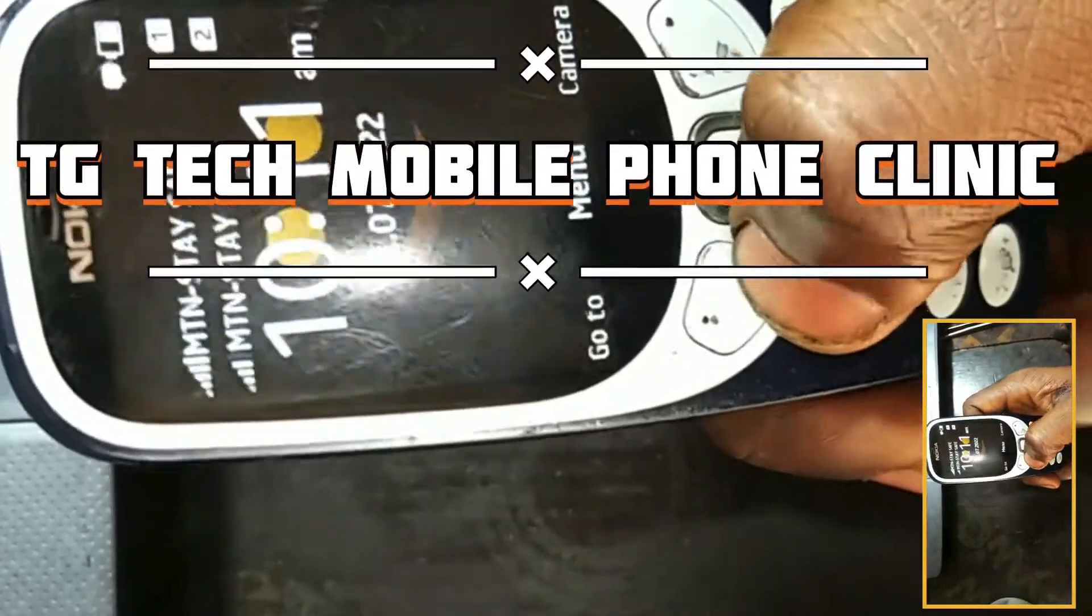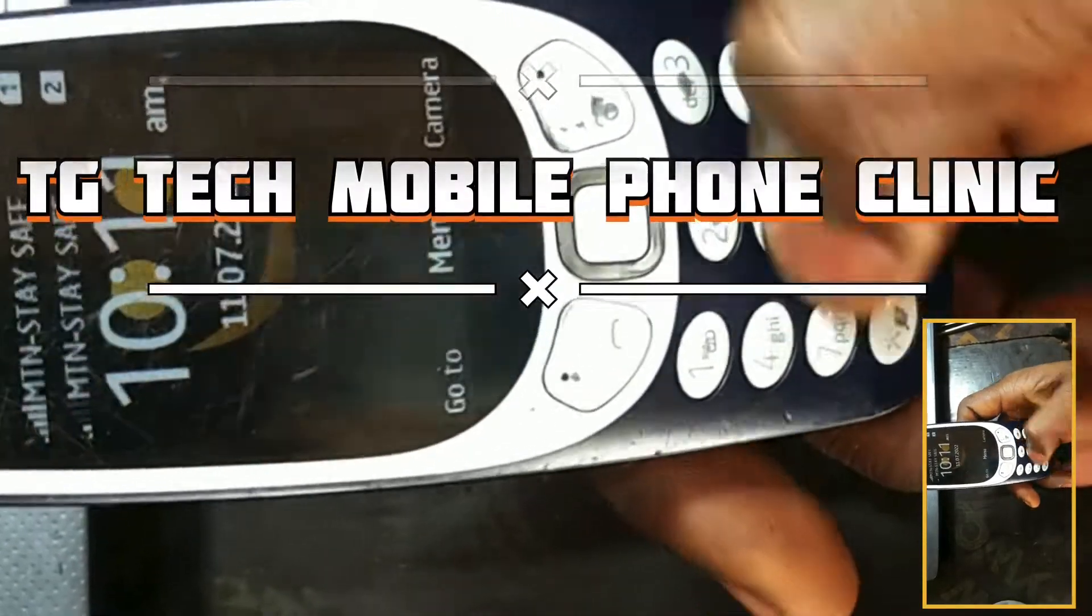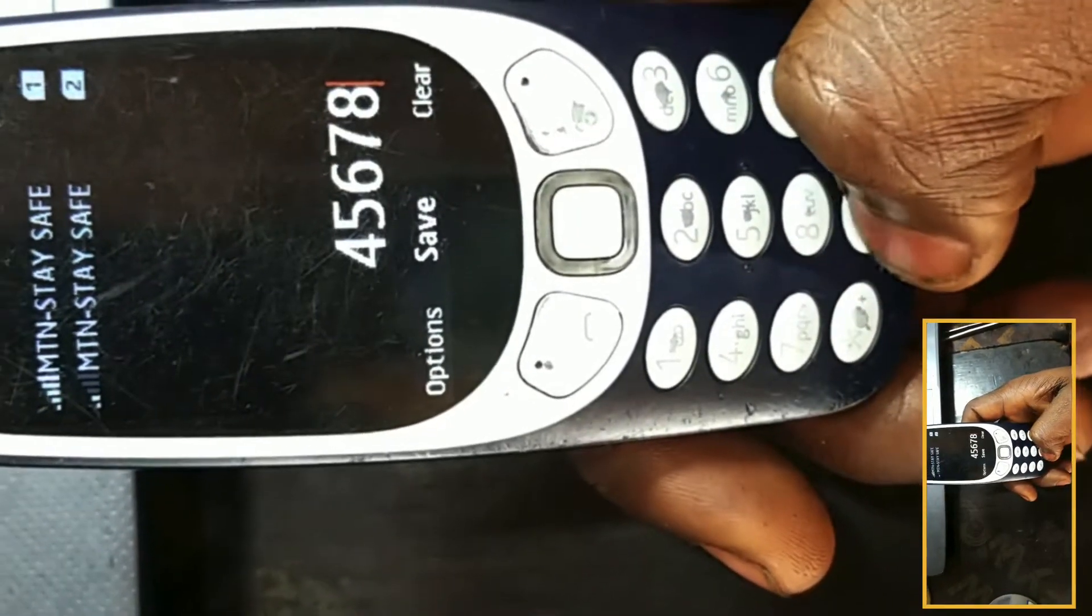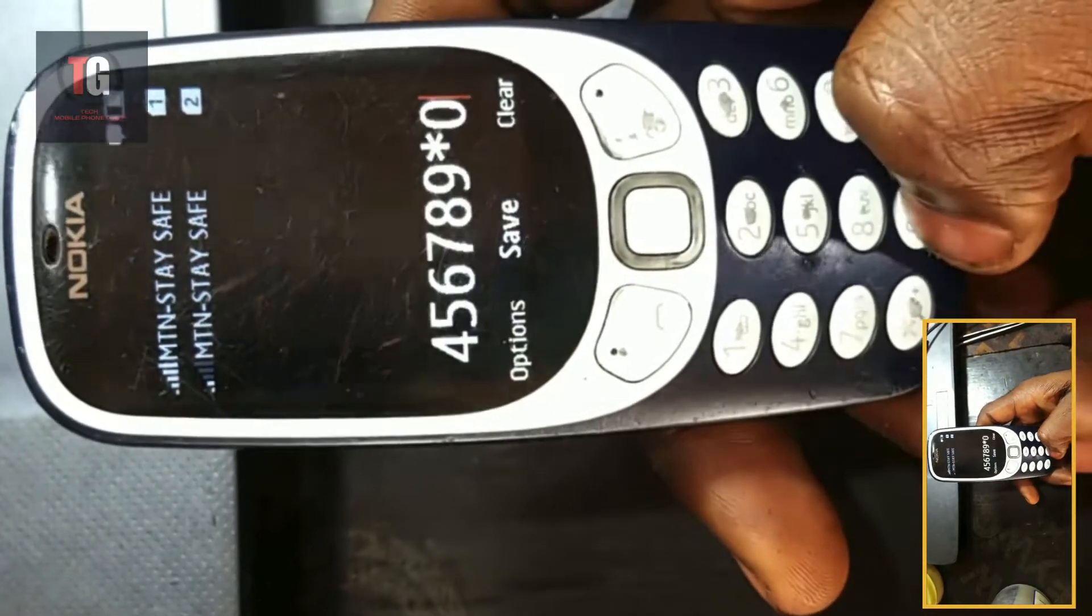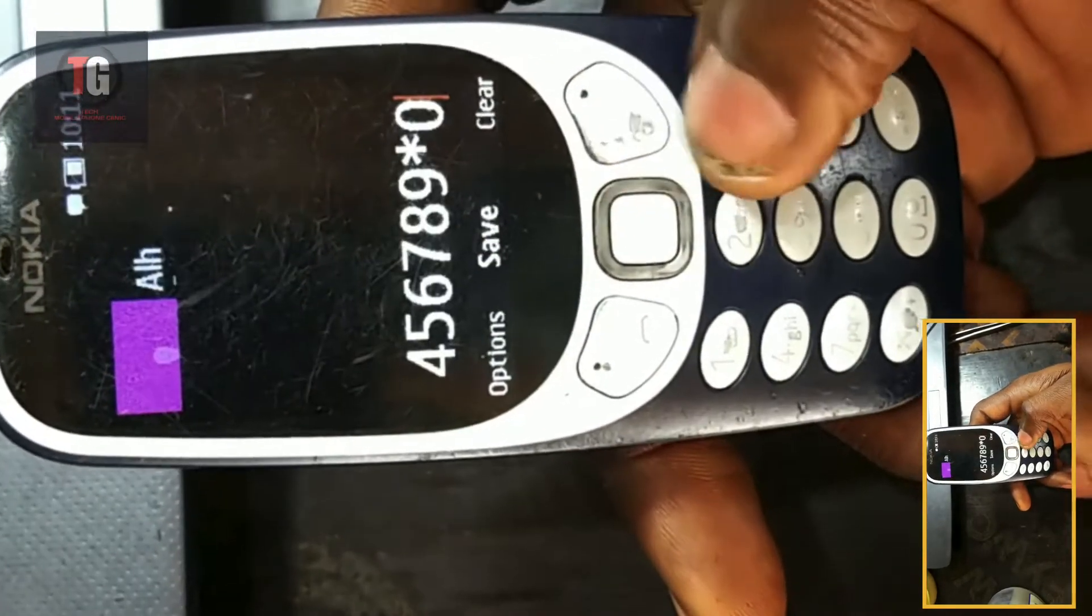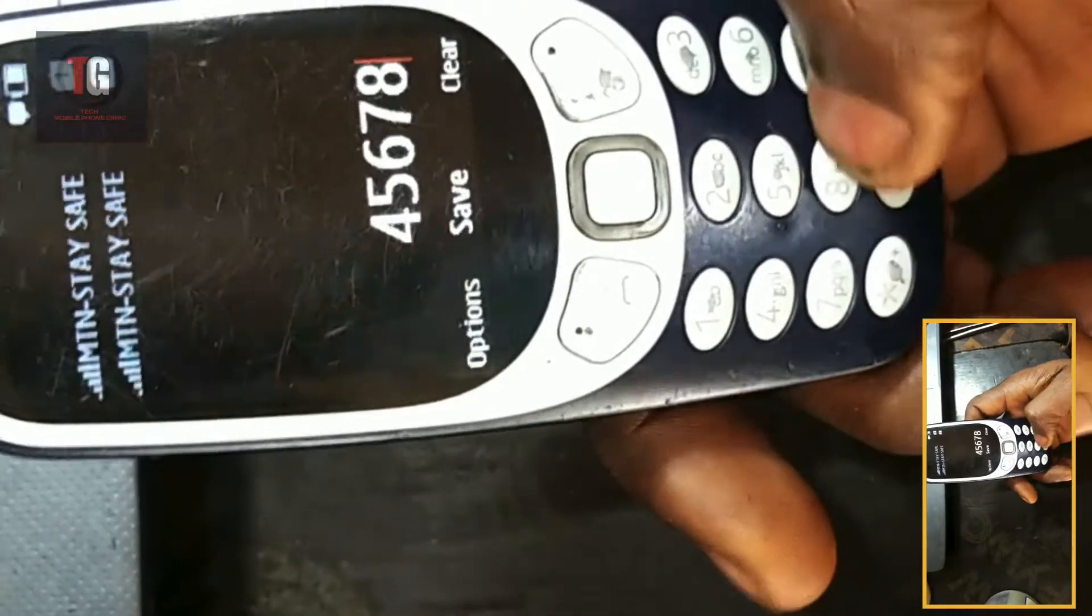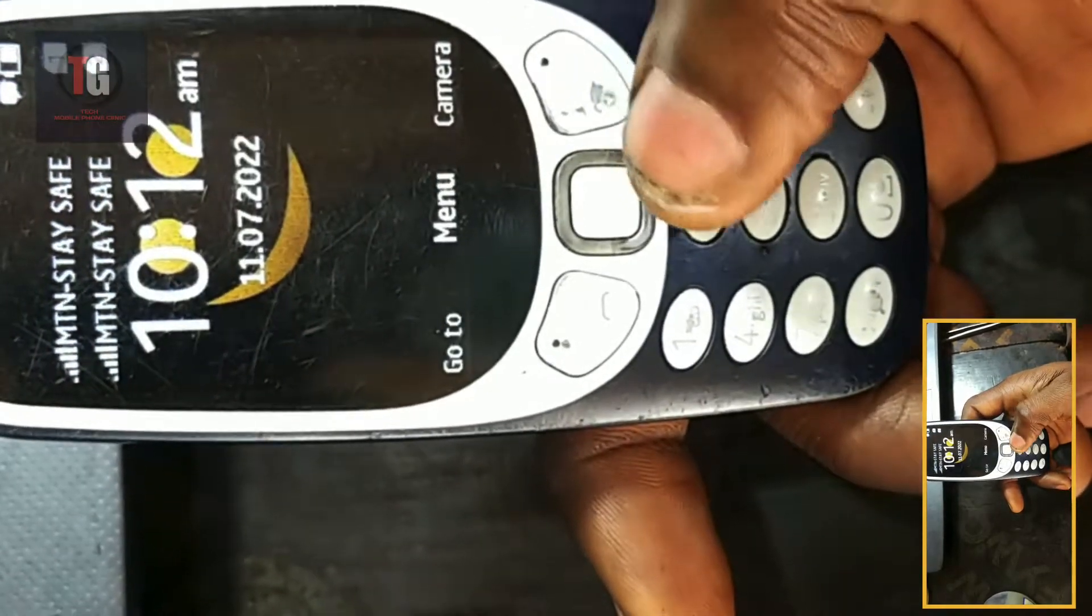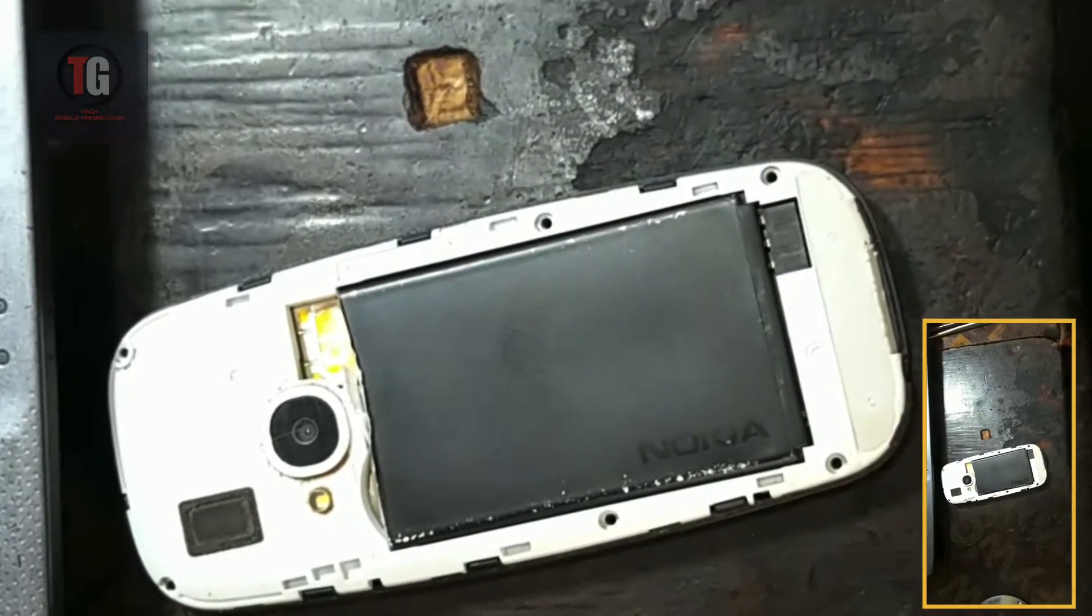The option buttons are not working, the dialing button is not working. One is not working, two is not working, three is not working, four is not working. Four is working rather, six is working, five is working, seven, eight, nine is working. Then we have star is working, zero and hash is working. So the only keys that are not working are the option button, the dialing button, and one, two, three. All the rest are working.